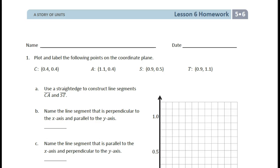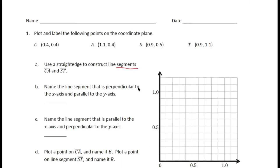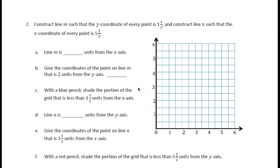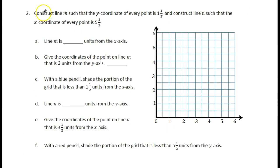We can see on here it says to plot and label the following points on the plane, then use a straight edge to make what they're calling segments — parts of lines. I'm going to go to number 2 because some of these concepts we'll explore. This one is telling us to construct a line called M so that the Y coordinate at every — and that's an important word, every — point is one and a half.